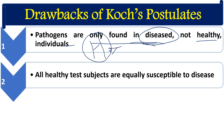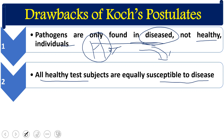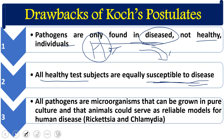The second drawback is that not all healthy test subjects are equally susceptible to disease. According to Koch's postulates, all susceptible hosts should have the same immunity and the same pathogenicity would be caused. But in reality, susceptibility to a disease depends on immunity and a number of other factors, and it differs from individual to individual. So not every individual is equally susceptible to a particular disease, making the third postulate not exactly correct.